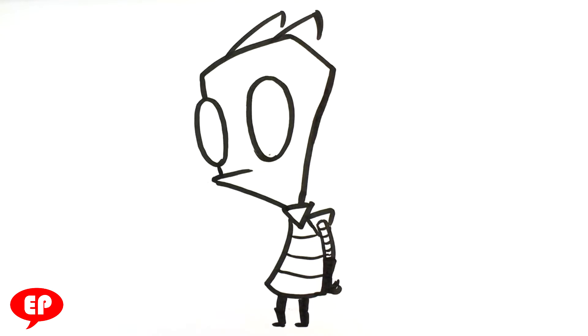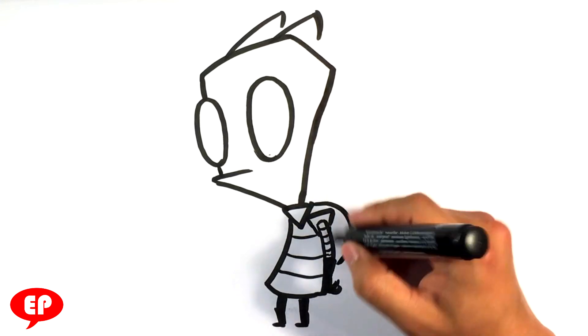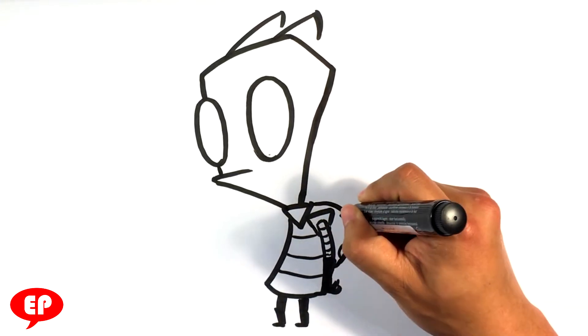And that's pretty much it. It's very simple. Oh, I forgot his backpack as well. He's got like that egg-like backpack that his spider legs come out of.